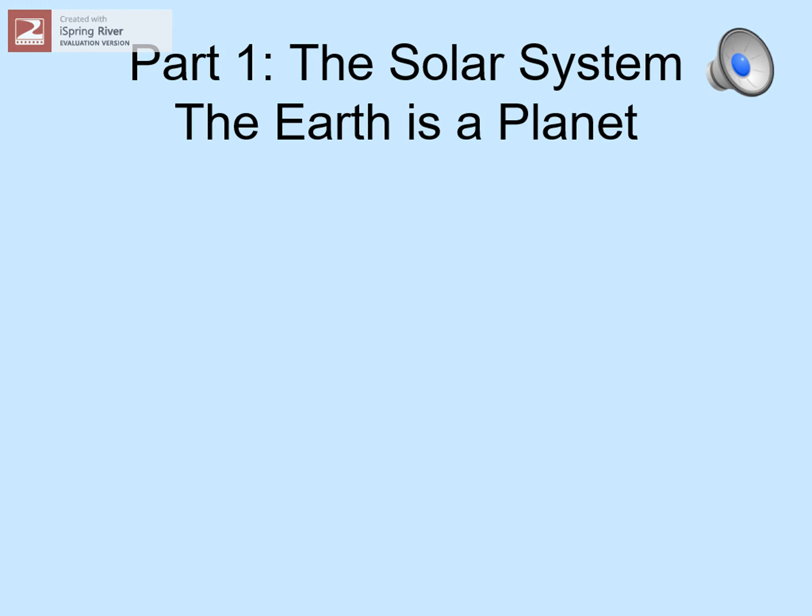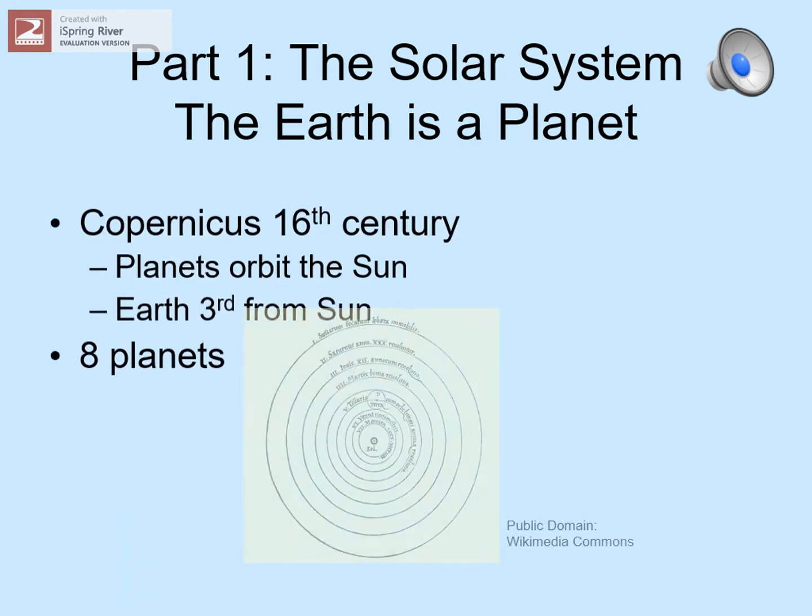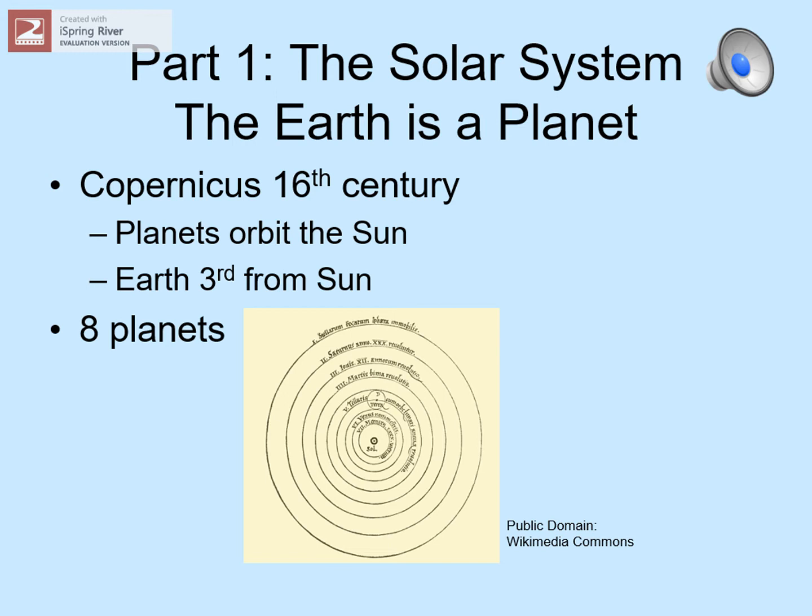Let's start with the solar system. The big idea to appreciate here is that the Earth is a planet. You probably already knew that, but it's good to remember that just a few hundred years ago, if you'd said anything like this, most people would say you were nuts. So what does it mean to say that the Earth is a planet? There are eight planets traveling around the Sun. The Earth is the third one out. Since the whole thing is orbiting around the Sun, we call it a solar system.